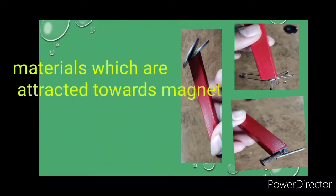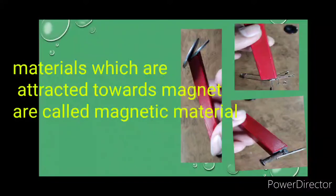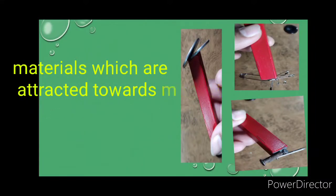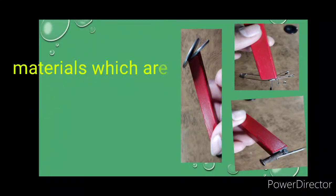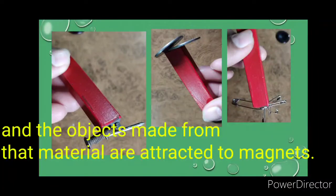Materials which are attracted toward a magnet are called magnetic materials, and the objects made from those materials are attracted to magnets.